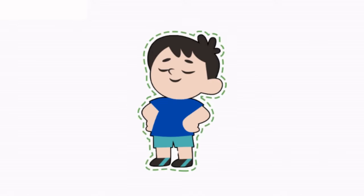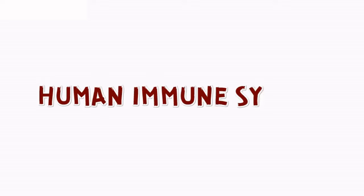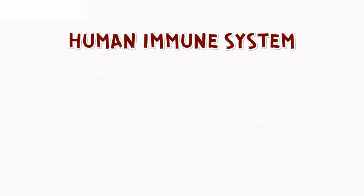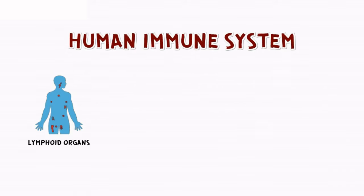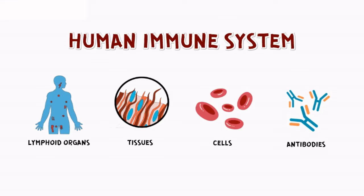Immunity refers to the body's ability to defend against foreign agents, and the human immune system consists of lymphoid organs, tissues, cells, and soluble molecules like antibodies.